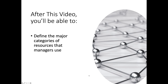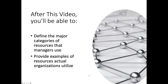As this video wraps up, we hope you can define the major categories of resources that managers have at their disposal — physical resources, financial resources, informational resources, and human resources — and that you can provide examples from actual organizations. And not just Chevron, College of Marin, and Blue Bottle Coffee, but the organization you work at, or where your family and friends work, or the stores you buy things from.